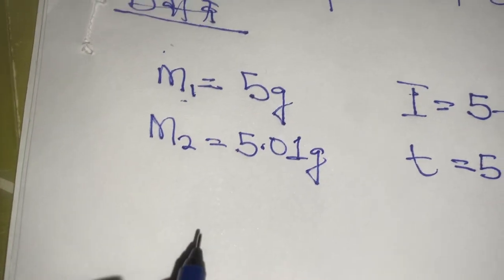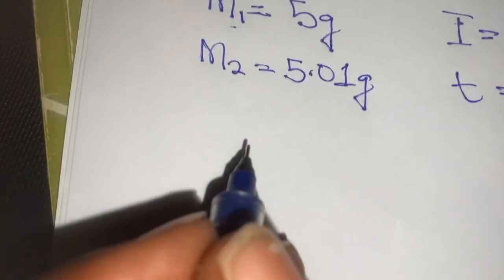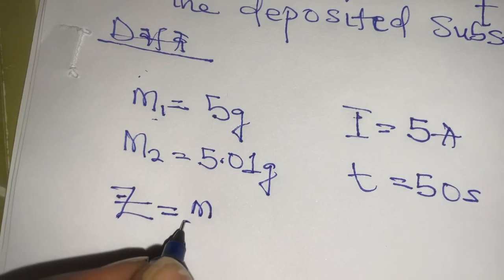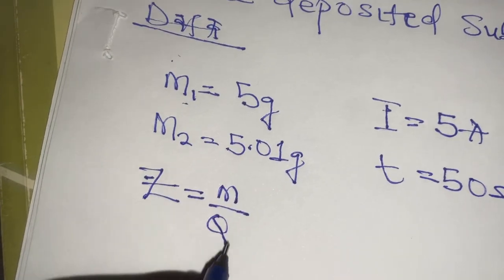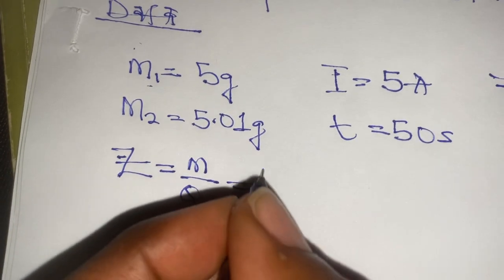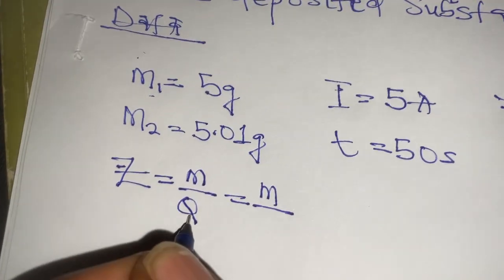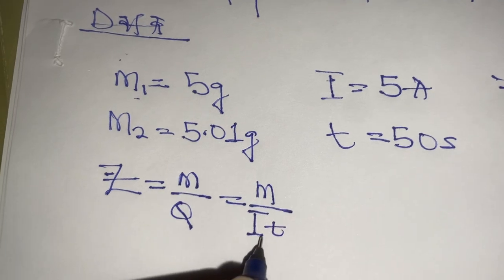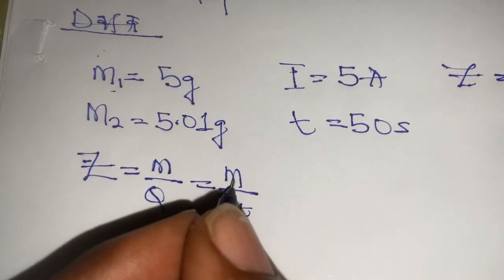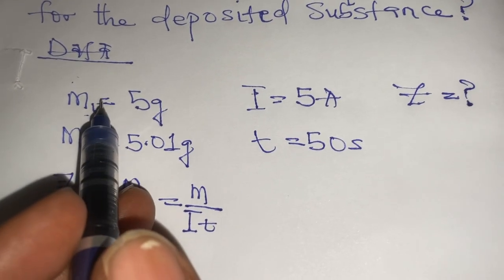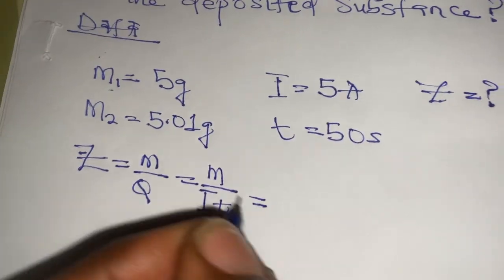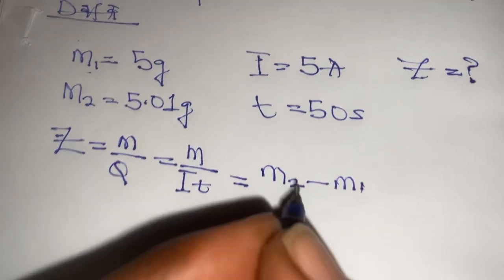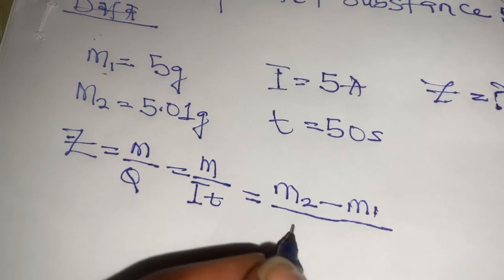Now, we all know that the formula for calculating Z is equal to M over Q, which is also equal to M over... Remember that Q is equal to IT, which is the quantity of charge, which is IT, which is current times time. But M here is the difference between M2 and M1, which means this is going to be M2 minus M1 all over IT.